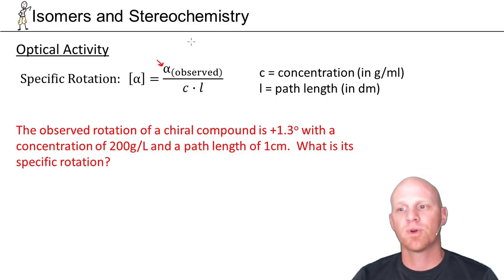How far that light gets rotated will depend on the concentration of molecules. The more molecules it comes into contact with, the more it will get rotated, as well as the path length of light. The longer the solution that the light has to pass through, the more molecules it's going to interact with as well.